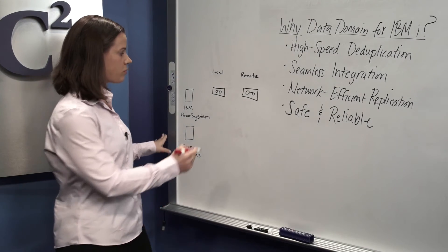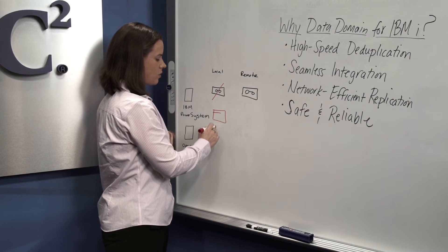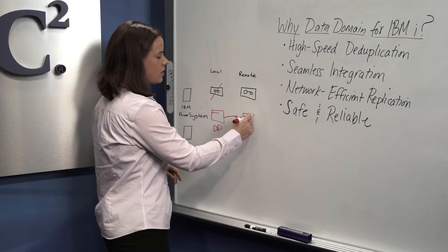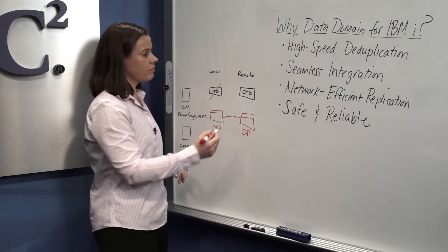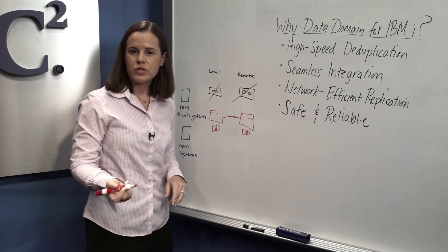With the Data Domain system, you would replace some or all of this local tape with a Data Domain system. Then you could efficiently replicate that to a Data Domain system at the DR site, which means you can stop shipping tapes off-site. But why would you want to do all this?